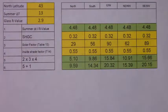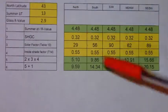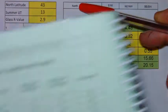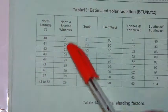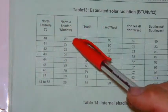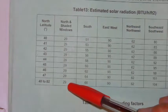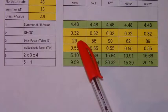We have 43 degrees north latitude. For a north-facing window, you can see that all north-facing windows have a multiplier of 29, so you would simply take 29 and put it in this box.